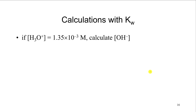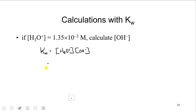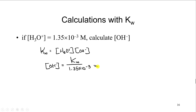You can also use the Kw expression to calculate one value from another. For example, if the hydronium concentration is 1.35×10⁻³, you can calculate the hydroxide ion concentration. Kw equals the concentration of hydronium times the concentration of hydroxide, so the concentration of hydroxide equals Kw divided by 1.35×10⁻³, which comes out to be 7.41×10⁻¹².